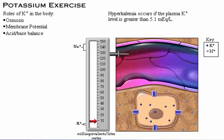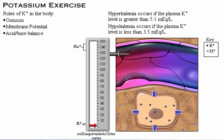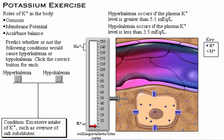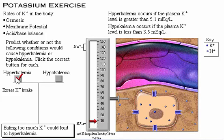Hyperkalemia occurs if the plasma potassium level is greater than 5.1 mEq per liter. Hypokalemia occurs if the plasma potassium level is less than 3.5 mEq per liter. For example, excessive intake of potassium, such as overuse of salt substitutes, could lead to hyperkalemia.